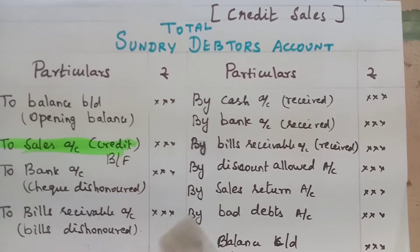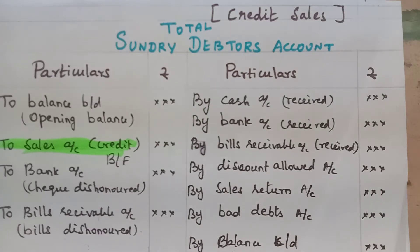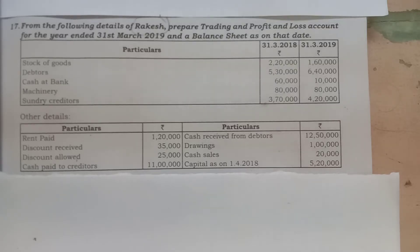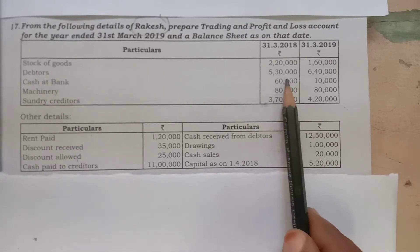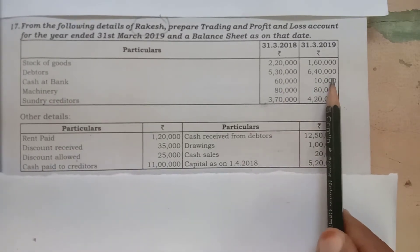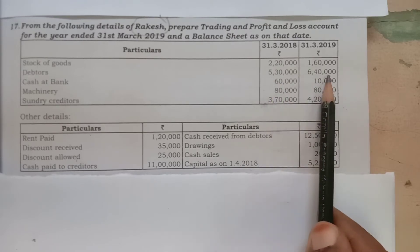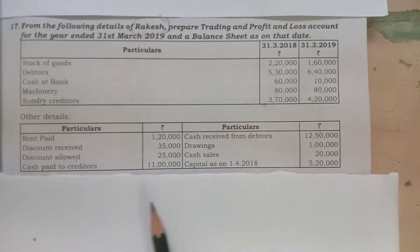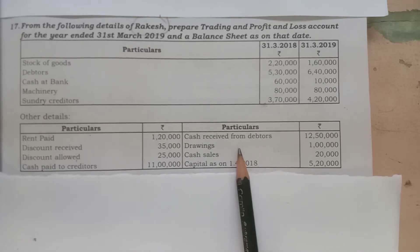So now we will see how the total debtors account works. This is the total debtors account with opening balance and closing balance. We will see the debtors - the opening and closing. This is the debit side and credit side of the total debtors account.